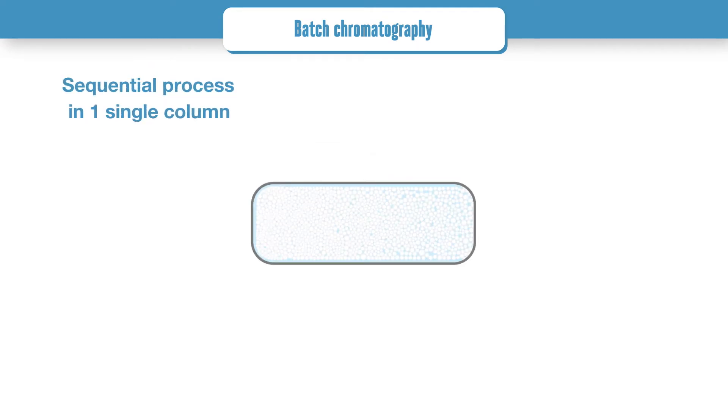Batch chromatography is a sequential process, taking place in one single column, composed of injection, elution and collecting steps.